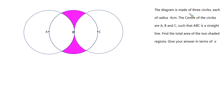The diagram is made of three circles, each of radius 4cm. The centers of the circles are A, B and C such that A, B, C is a straight line. Find the total area of the two shaded regions. Give your answer in terms of pi.